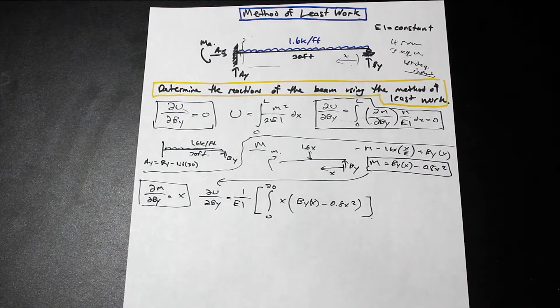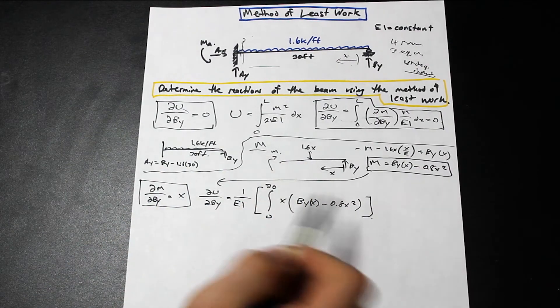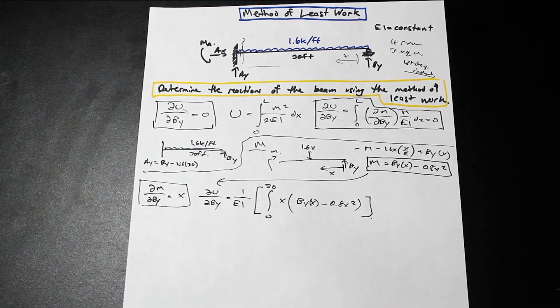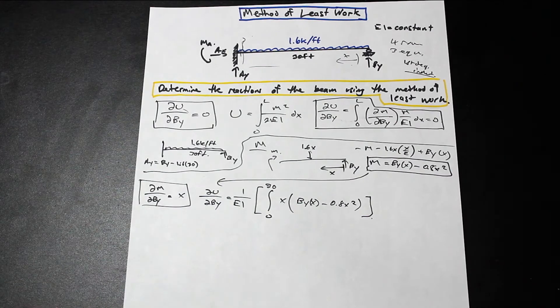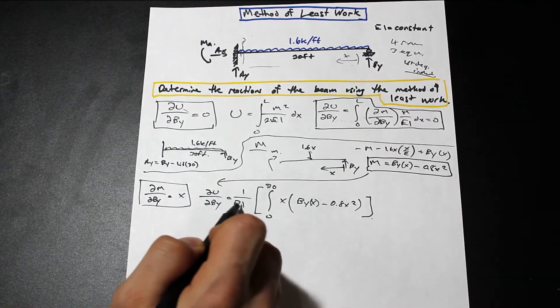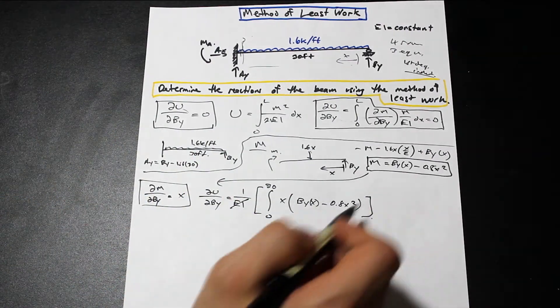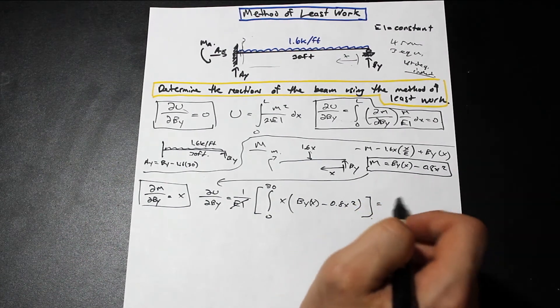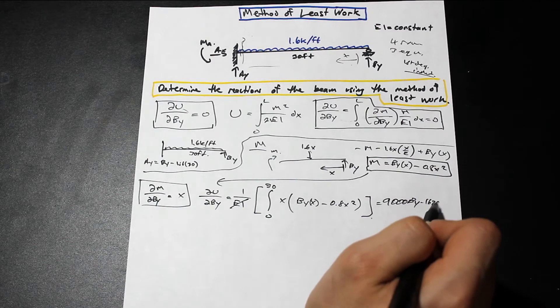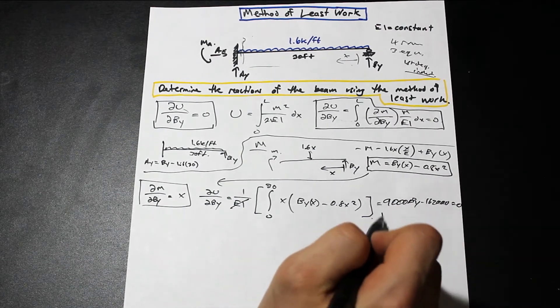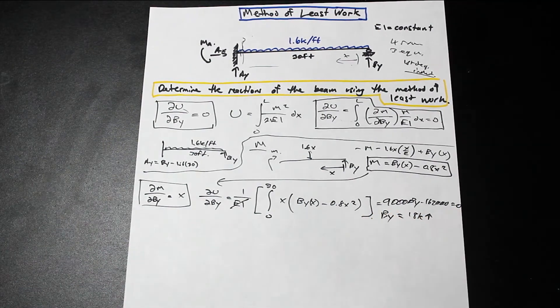And that's actually pretty straightforward. Go ahead and integrate and solve for BY. I'm not going to do that. You don't want to see me integrate that, I'm sure. Let's focus on how to solve the problem. So try this on your own. If you're getting something different, post in the comments down below and I'll help you out. So we're going to get, once we integrate this from 0 to 30, and we plug in, EI is constant, so that's just going to go away. We're going to get this is equal to 9,000 BY minus 162,000 equals 0. And we're going to get that solving for BY, BY is 18 kip, and that is up.